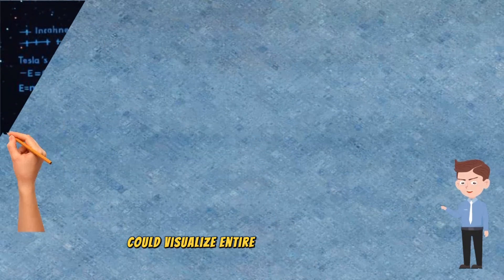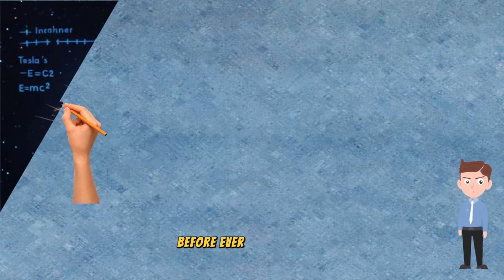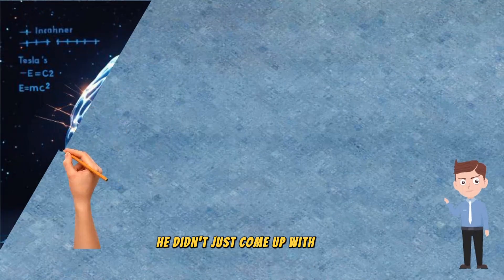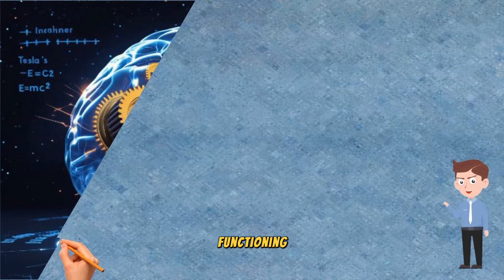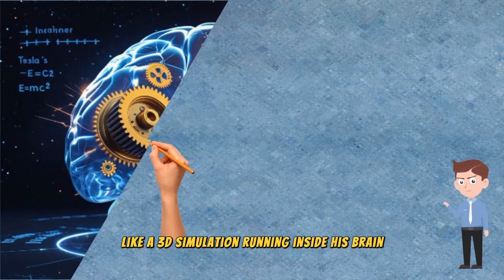Nikola Tesla could visualize entire machines in his head before ever building them. He didn't just come up with ideas. He saw them, fully formed, moving, functioning, like a 3D simulation running inside his brain.